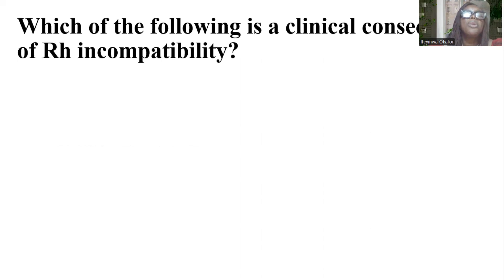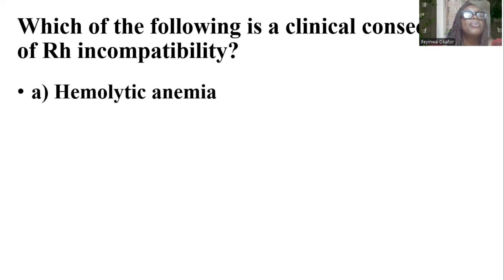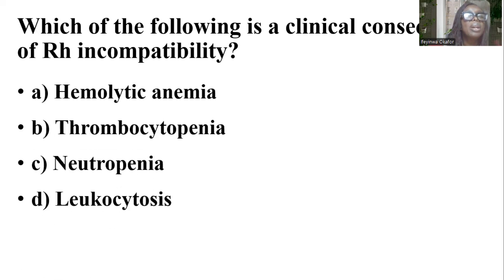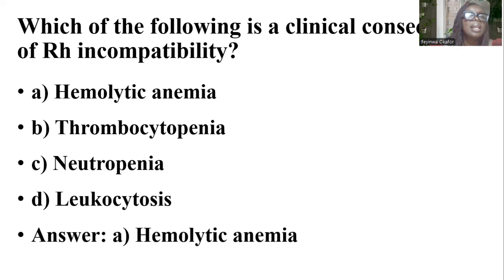Which of the following is the clinical consequence of RH incompatibility? Options are hemolytic anemia, thrombocytopenia, neutropenia, and leukocytosis. And the answer is A — hemolytic anemia.